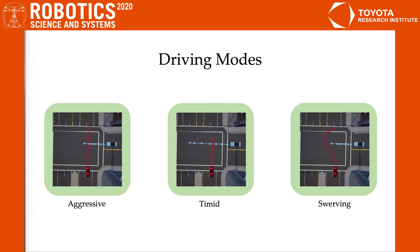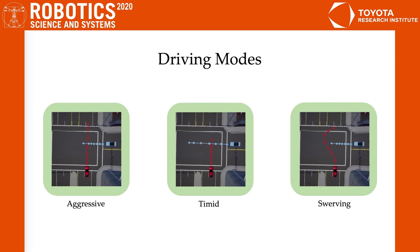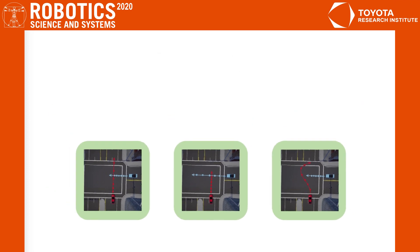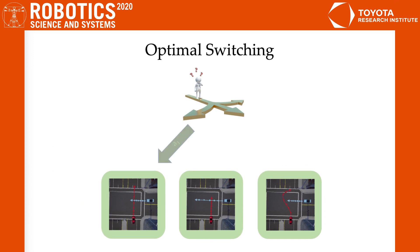These phase transitions naturally create different modes of driving. For example, depending on small changes in the blue car's driving, the red car might aggressively drive forward, timidly stop, or swerve around. Given these modes, the autonomous car needs to decide how to switch between the modes to handle the phase transitions in near accident scenarios.